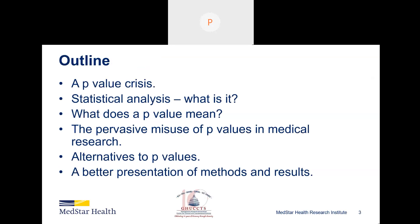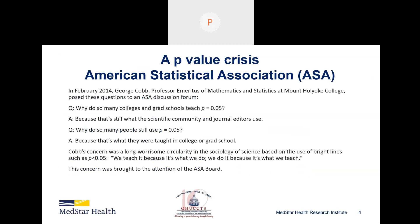Here is the outline of what I'm going to talk about. We're going to look at the current p-value crisis — you may not have thought of it as a crisis, but it's actually been going on for quite a while. Then I'll talk about what you're actually doing when you analyze data from a research study, what a p-value means, the pervasive misuse of p-values in medical research, alternatives to p-values, and how to better present statistical methods and results in the literature.